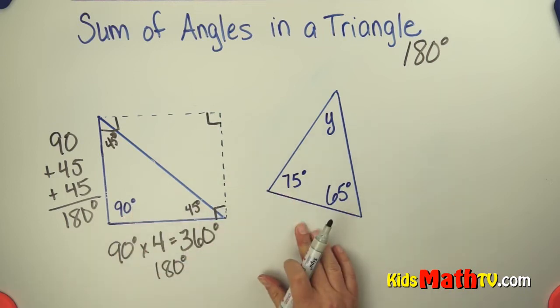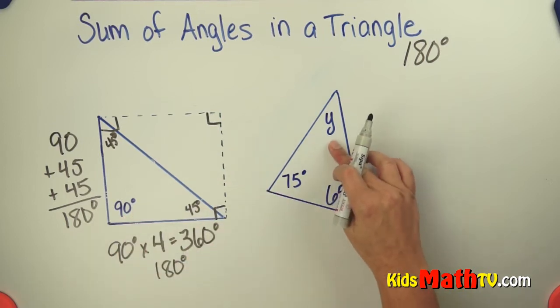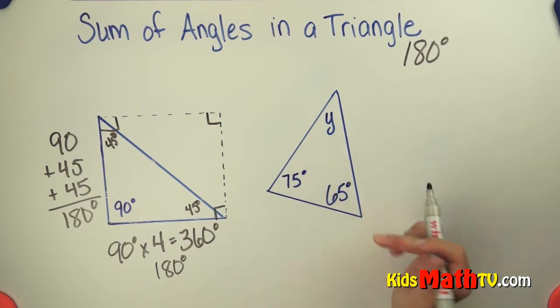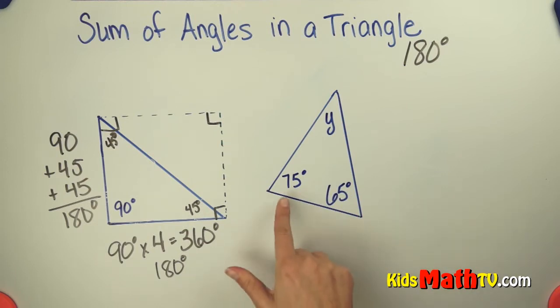We can use that principle to find the measure of other angles that we don't know in a triangle. We know that this entire triangle is 180 degrees. We also know that I've given you 75 degrees and 65 degrees.